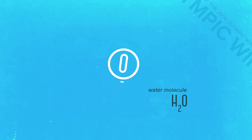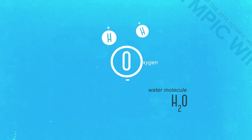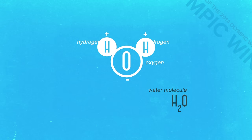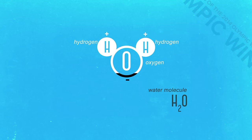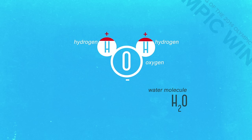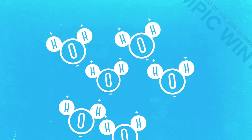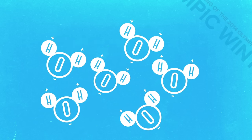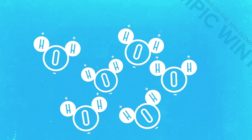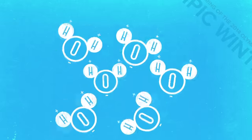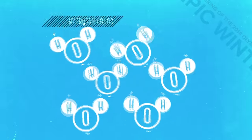Why is ice slippery? The answer begins with water molecules, made up of an oxygen atom bonded with two hydrogen atoms. The oxygen end has a negative charge, and the hydrogen end has a positive charge. The opposite charges attract other water molecules, like magnets, and form what are called hydrogen bonds.